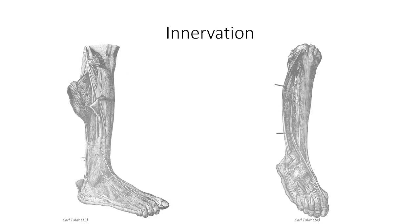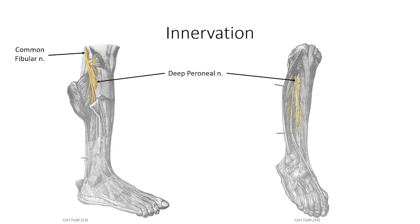We'll finish off this segment with a look at the innervation to the area. Both anterior and lateral compartments are innervated by branches of the common fibular nerve — the lateral component of the sciatic nerve — which passes through the lateral side of the popliteal fossa, wrapping around the neck of the fibula. As it wraps around the fibula, it pierces the muscles of the lateral compartment and starts to branch. A series of these branches continue into the anterior compartment, where they are collectively known as the deep fibular nerve, which serves as the motor innervation to the muscles of the anterior compartment.